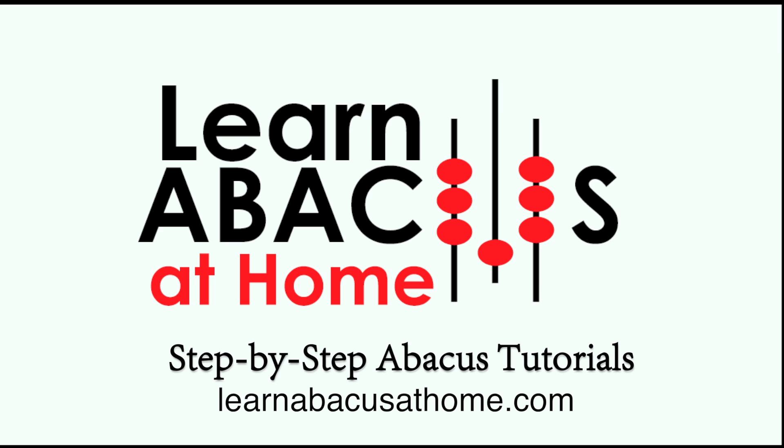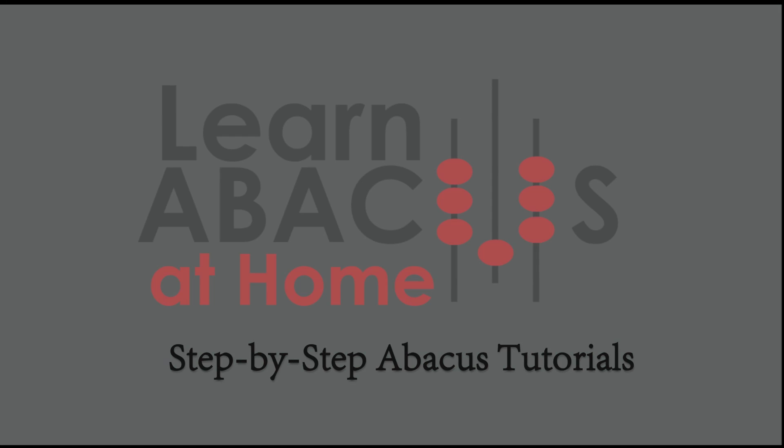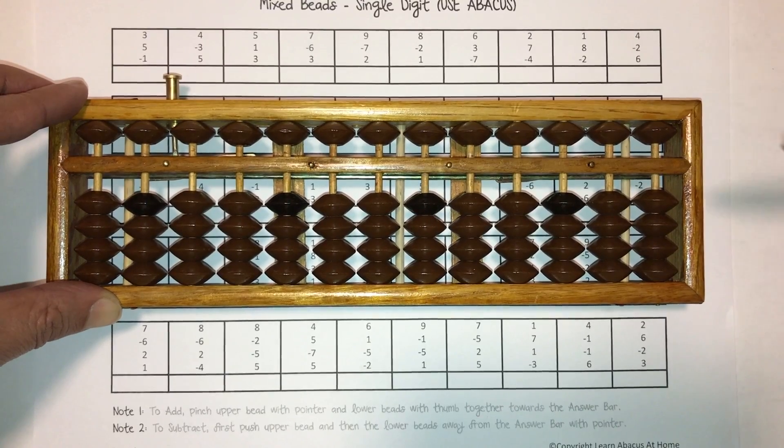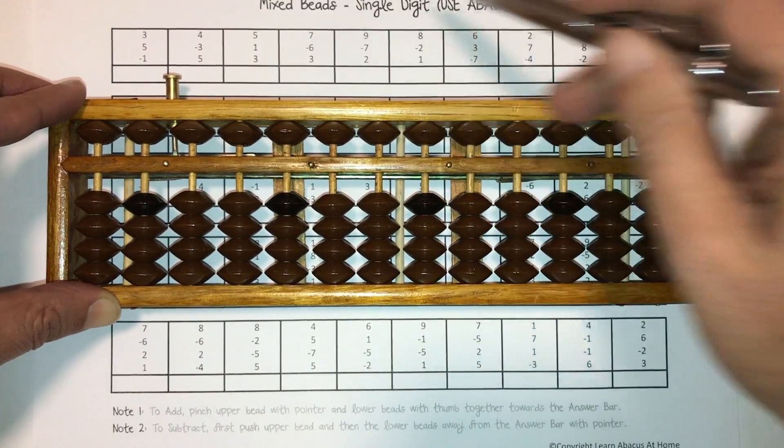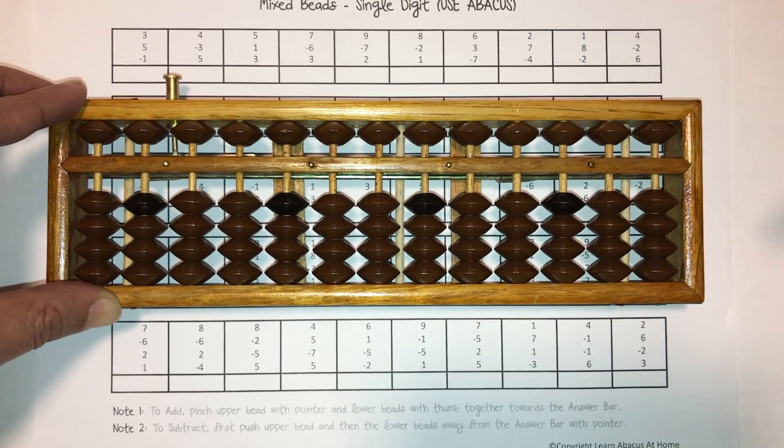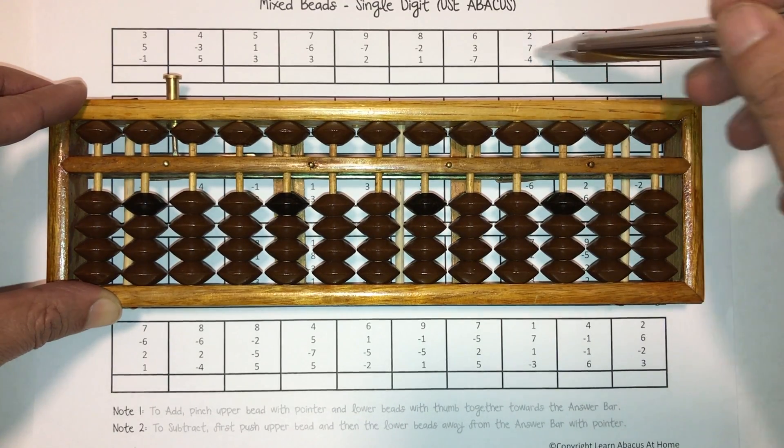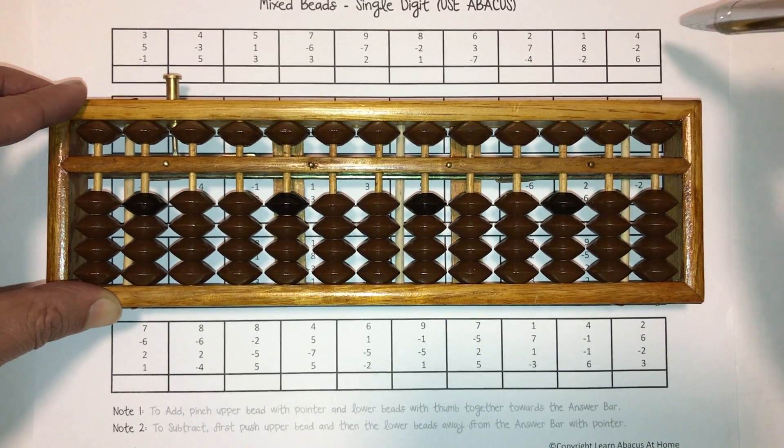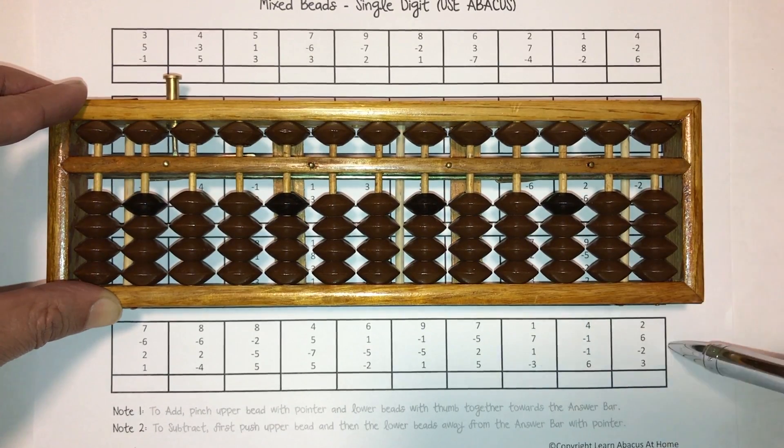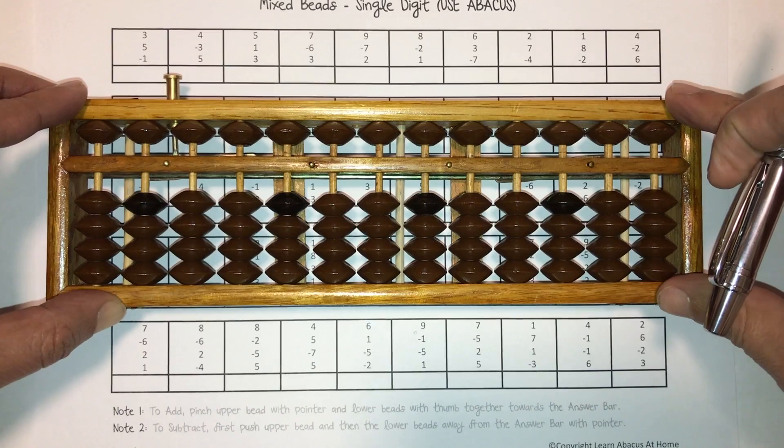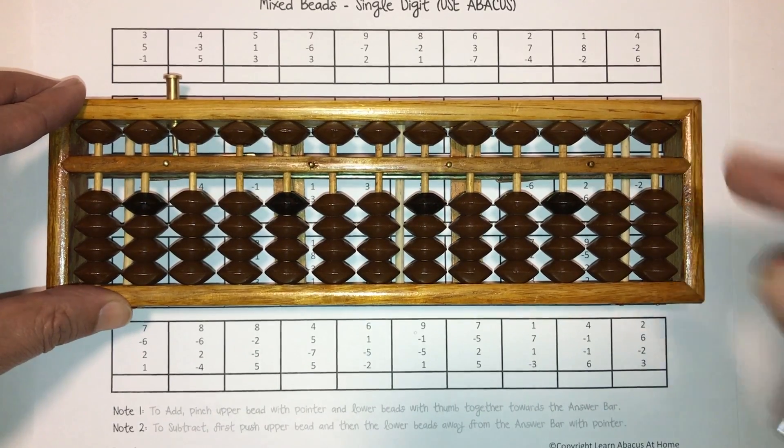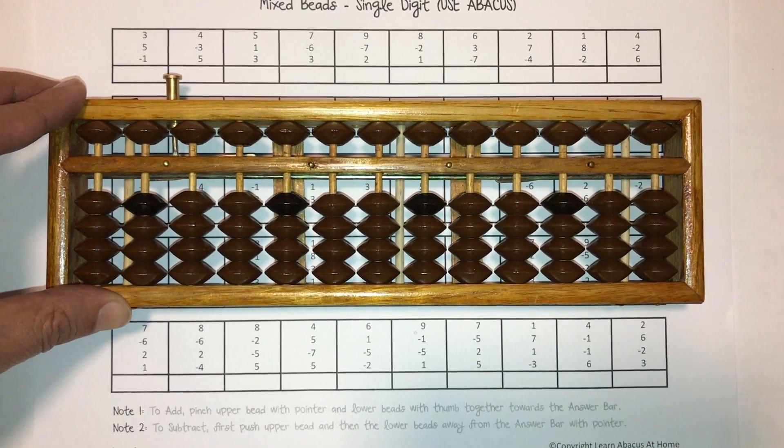Learn abacus at home step-by-step. In this worksheet support video, we're going to do some single digit mixed beads questions using the abacus. We're going to solve the last three questions of the first row and the last three questions of the fifth row on this worksheet. Let's get started.